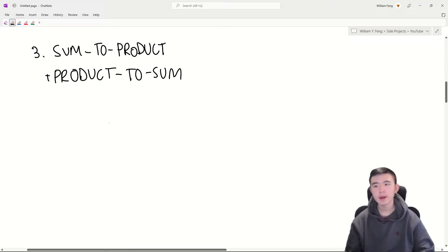Number three are the sum-to-product and product-to-sum trig identities. Now, these aren't worth remembering. They're usually most helpful when you remember how to derive them. I'll give one example here.